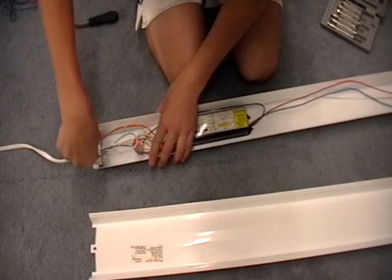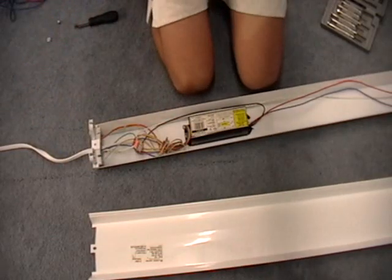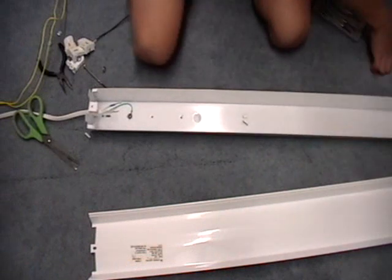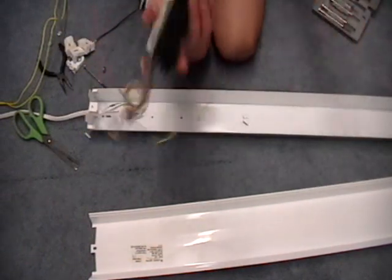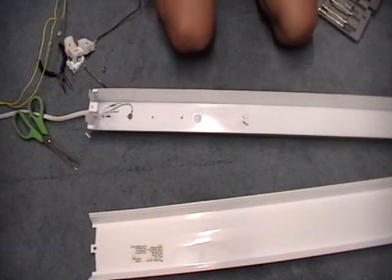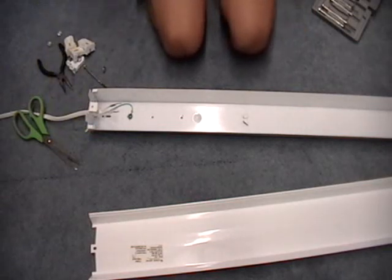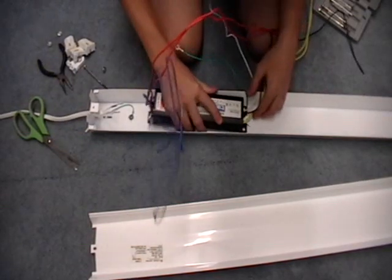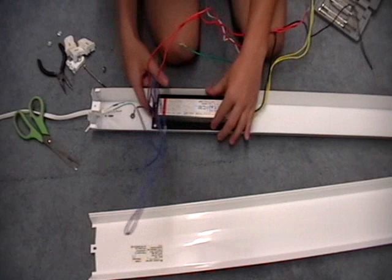So we got the old ballast out, which is here. Luckily this fixture has the notch there where you slide it in, and it's already got a pre-drilled hole there.